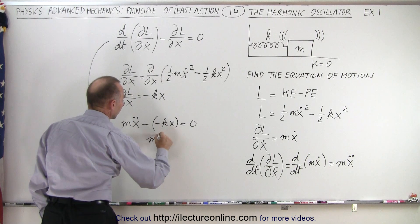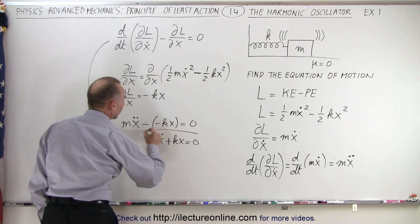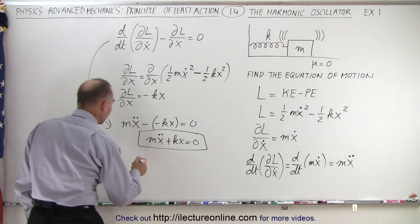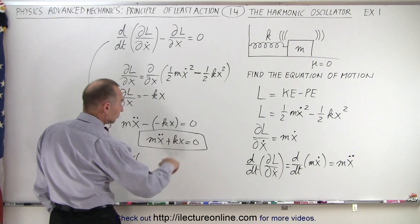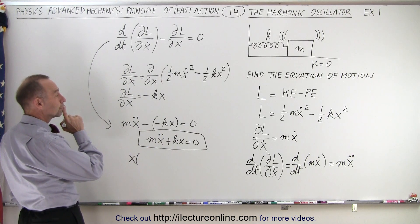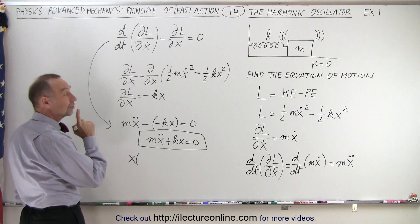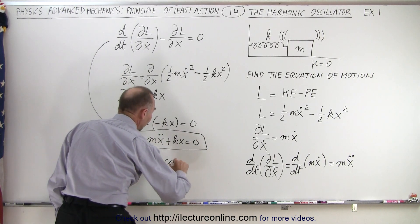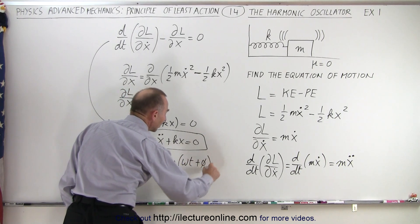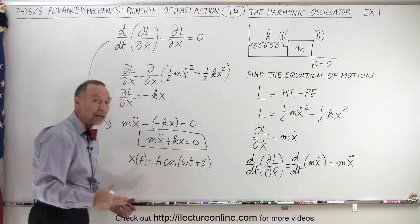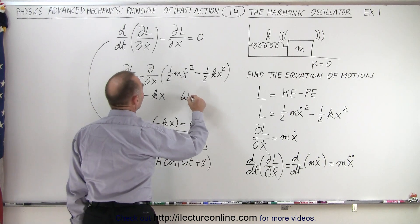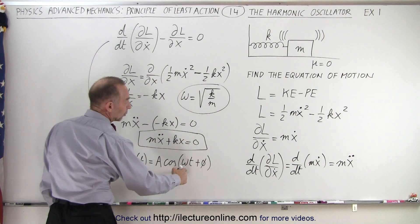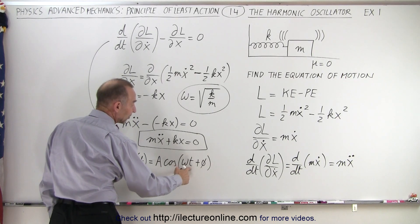Plugging into our equation: m x-double-dot minus the quantity minus kx equals zero, so we get m x-double-dot plus kx equals zero. That's a second-order differential equation. Most of us already know the solution: x as a function of t is some amplitude A times the cosine of omega t plus a phase angle. The amplitude A and the phase angle depend on the initial conditions, and omega is defined as the square root of k over m — the angular frequency of oscillation.